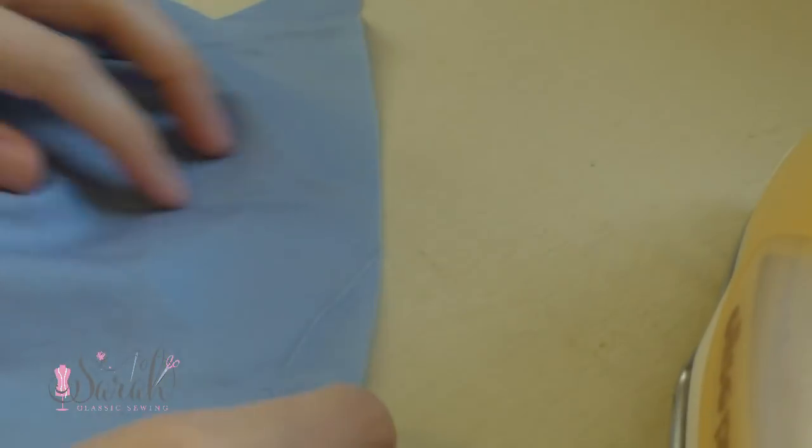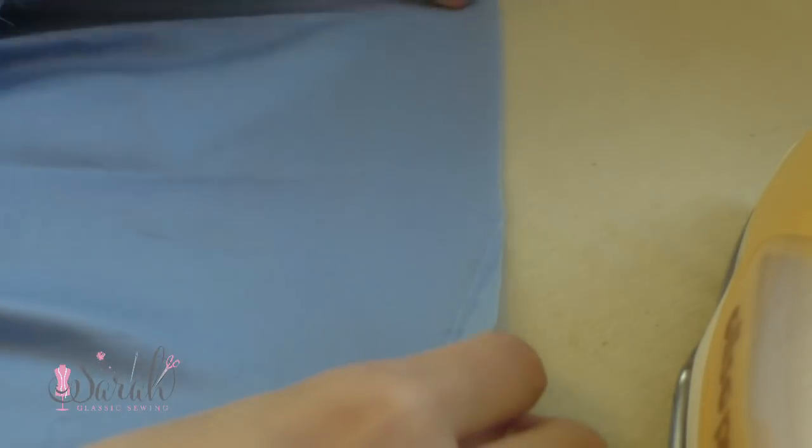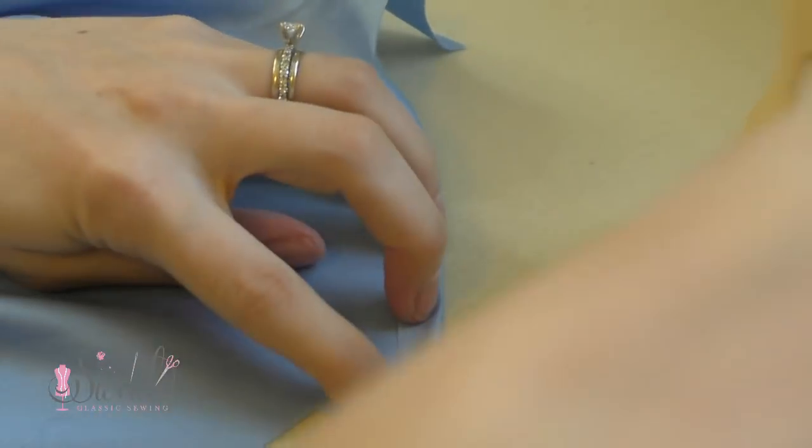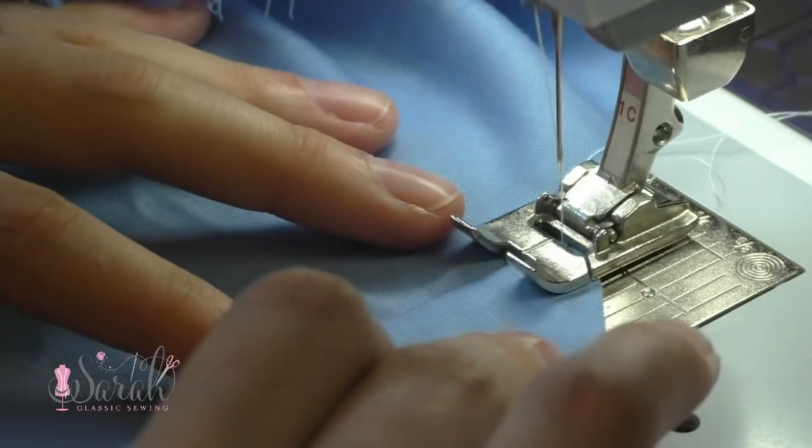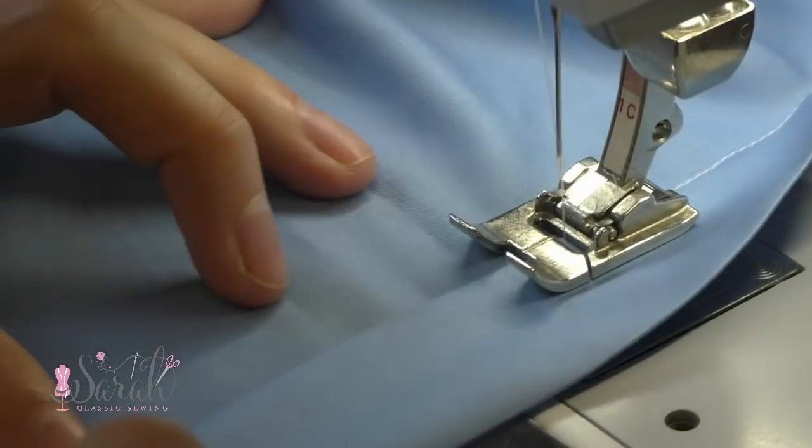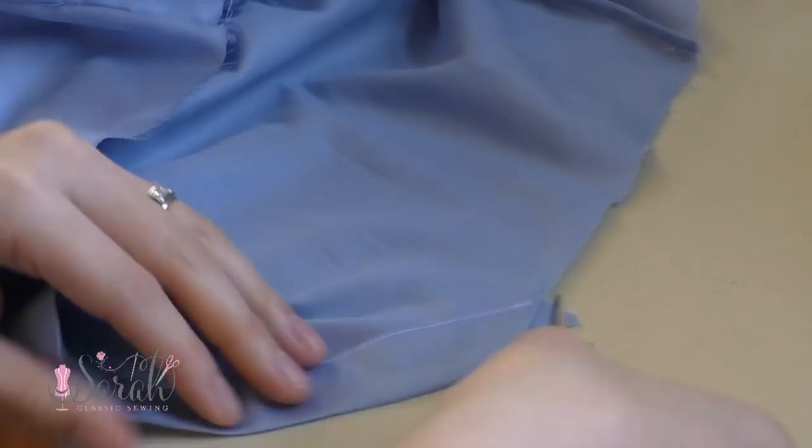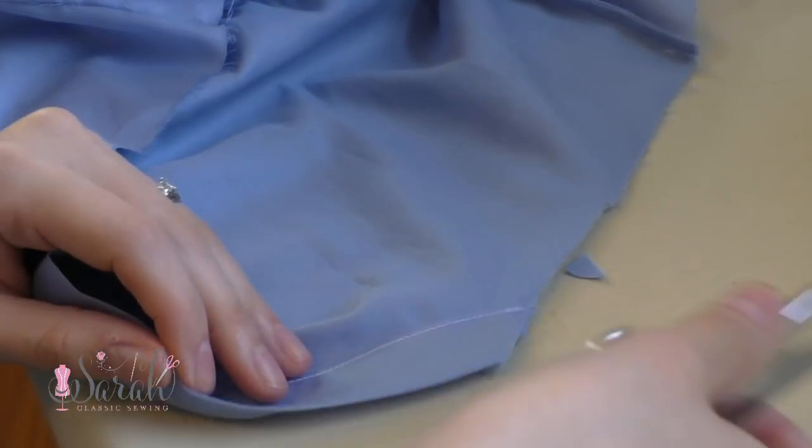And finally, you can move on to the crotch. First, I turned that raw edge up about a quarter of an inch and gave it an ironing and folded it up again until it was flush with those leg openings. And after stitching on top of that, then I moved on to folding up those leg openings.